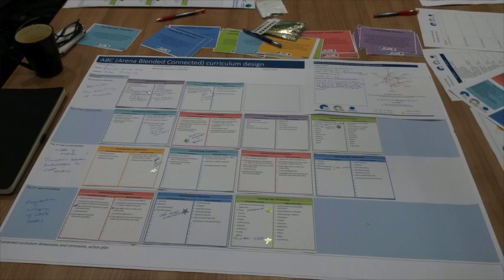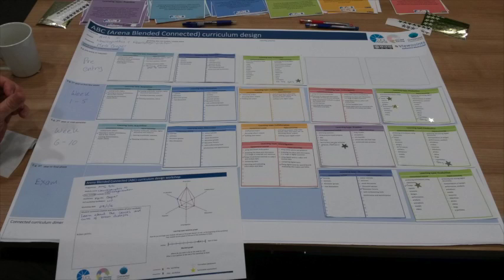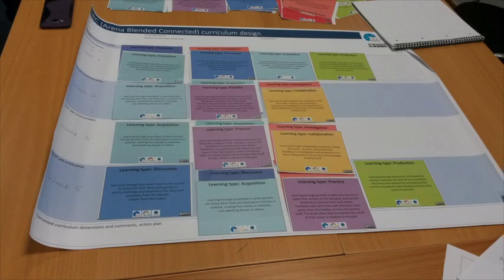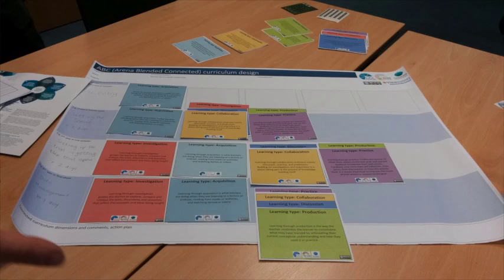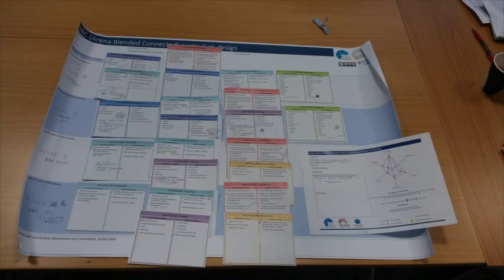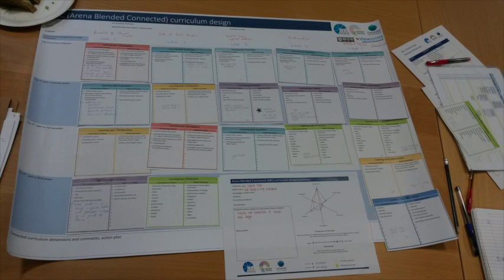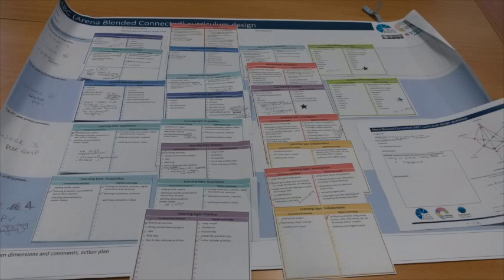What we love about the ABC method is that it gives module and programme teams a chance to come together and discuss the design of their new or reviewed programmes. It gives them a chance to think about new ideas and bring in new types of activities. Very importantly, they do it together, spark off ideas, and end up with something really useful they can take away.